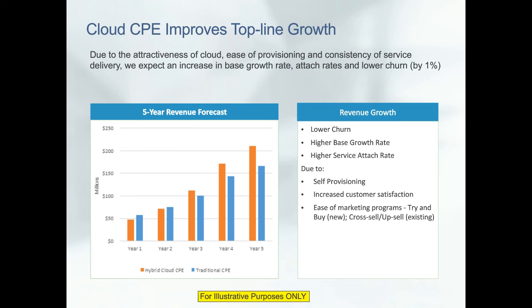What do all those assumptions amount to in terms of revenue modeling? As we see in the chart, the Cloud CPE represented by the orange bar comes out higher by the end of all five years — much higher by the end of the fifth year. The three factors that contributed to revenue growth are lower churn for Cloud CPE, higher base growth rate, and higher service attach rate. This happened because of the ability to have self-provisioning, increased customer satisfaction, and ease of marketing programs like try-and-buy, cross-sell, and up-sell.